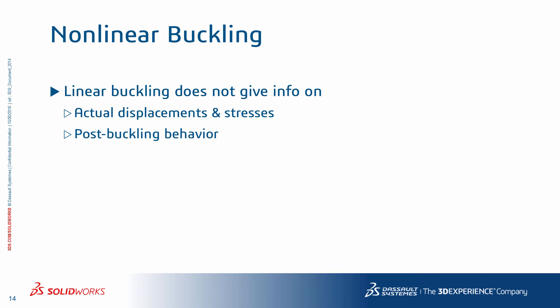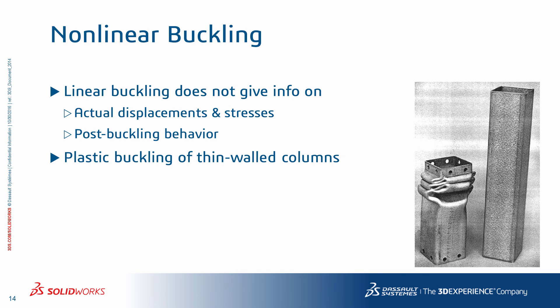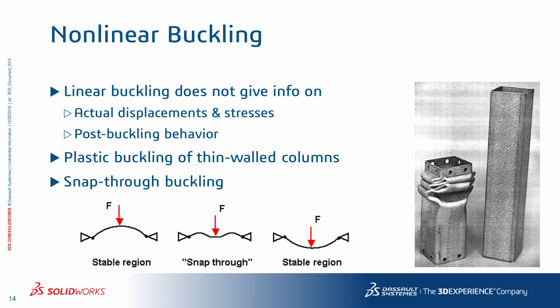Linear buckling does not provide any information about actual displacement and stresses in the model, nor any information about post-buckling behavior. After buckling, you have a redistribution of forces, and depending on the design, you may still have some load-carrying capacity in the system. Linear buckling does not provide any insight into those situations. Here you see the plastic buckling of a thin-walled column. In another example, snap-through buckling starts from one stable equilibrium situation and snaps through to another stable situation. These are examples of situations when you have to go to a nonlinear analysis.